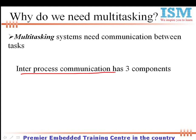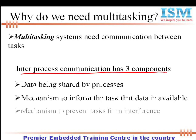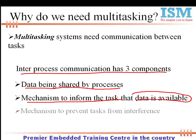Inter-process communication has three main components: namely the data you want to share between two or more processes, a mechanism to inform a process that the data is available for accessing, and also a mechanism to prevent the tasks or processes from interference — when one process is using data, we should not allow other processes to access the same data.